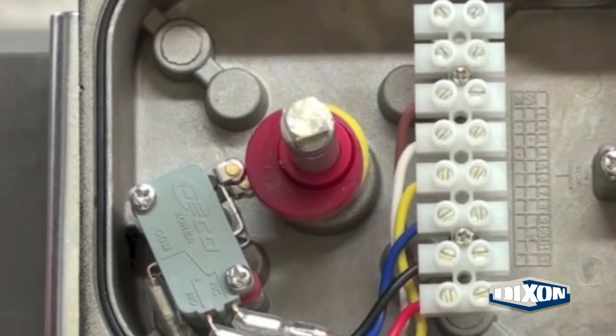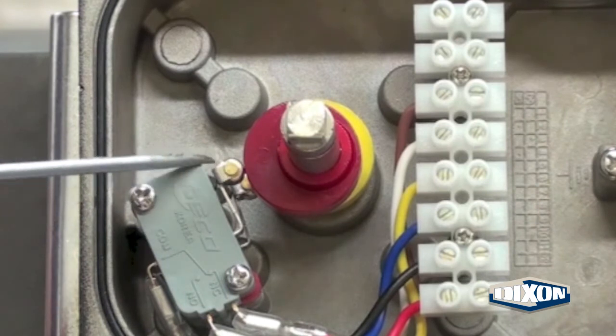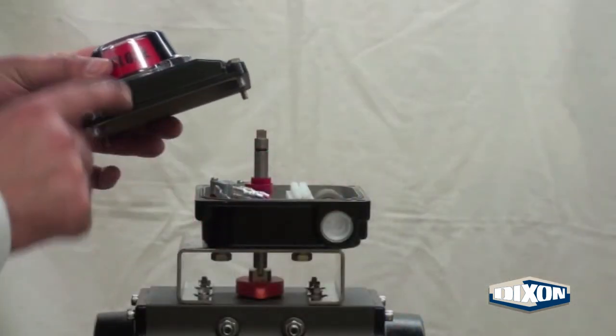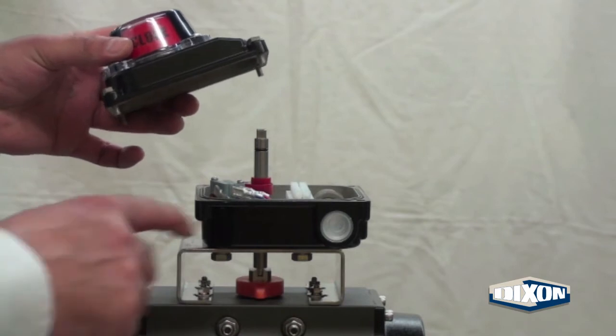Close the valve to ensure that the red cam depresses the upper switch. The engaged cam color corresponds to the color in the window of the beacon.